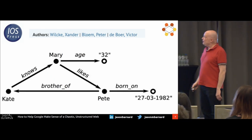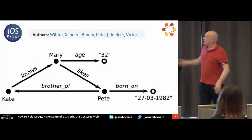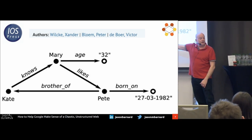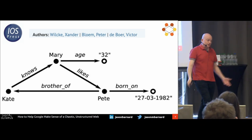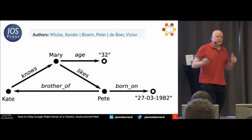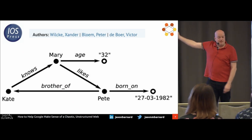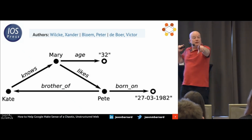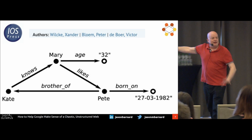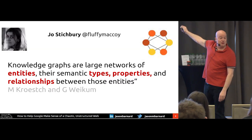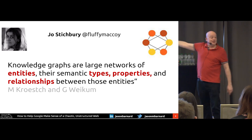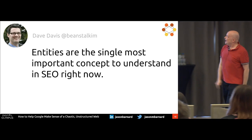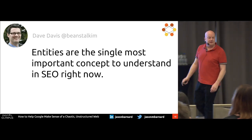There's a nice representation of it — it makes sense all of a sudden. What we're seeing is what we call in graph theory: nodes with relationships. In knowledge graphs, entities with relationships to other entities. What is an entity? You'll be able to see the slides afterwards and you can look up Fluffy McCoy — love her name, worth following. Dave Davis: entities are the single most important concept to understand in SEO right now.